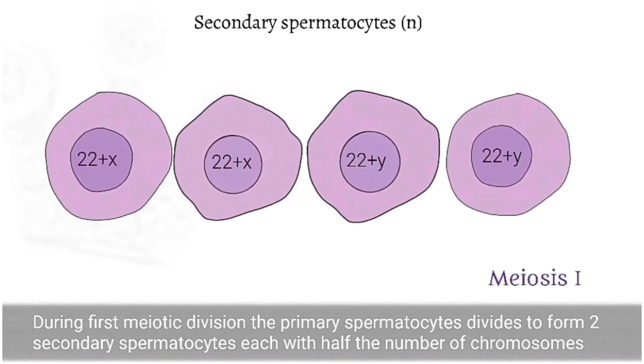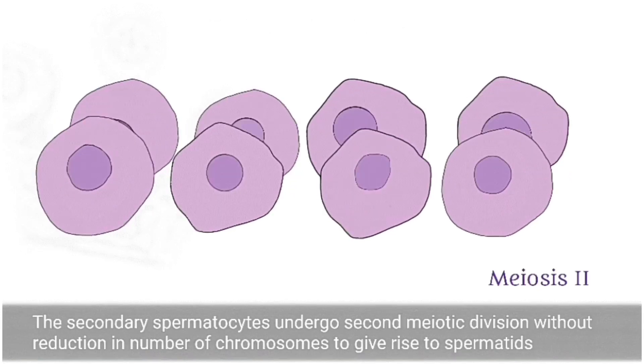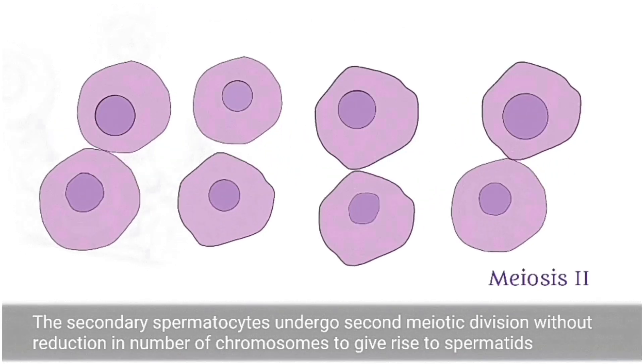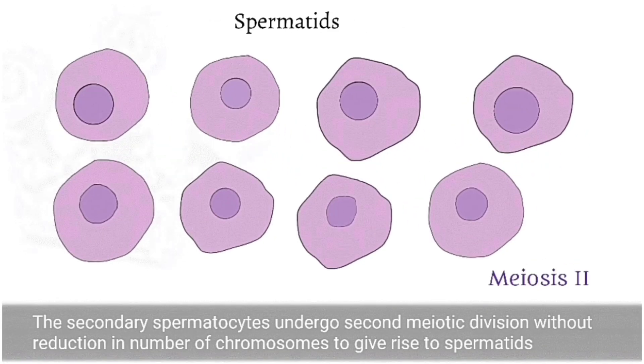These secondary spermatocytes undergo a second meiotic division without any reduction in the number of chromosomes to finally give rise to spermatids.